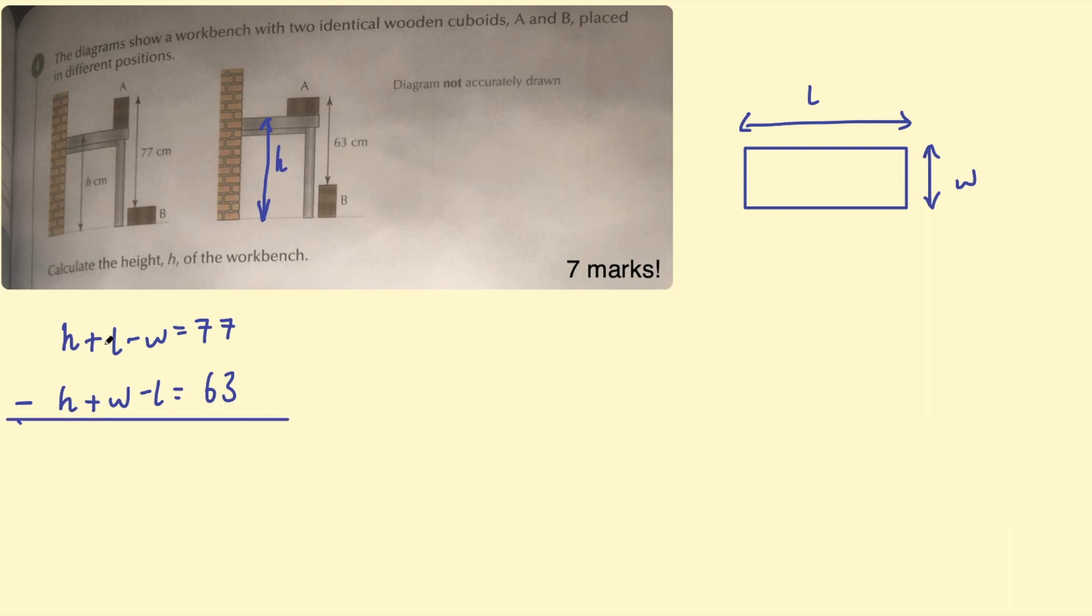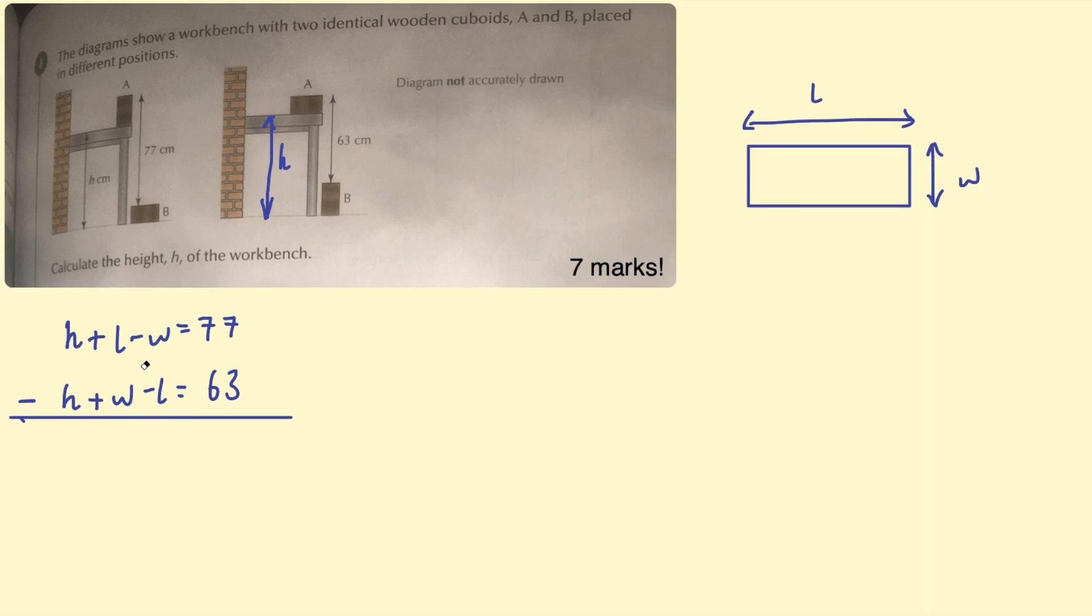So to eliminate one of the unknowns, you can subtract these equations. This is called the elimination method of solving simultaneous equations. So subtract these equations, just as you'd subtract anything else, like subtract two two-digit numbers. And I actually might write this round slightly differently because it's going to make it easier to solve with the simultaneous equations. So we had negative L plus W. Okay, basically when you're doing elimination, it's important to have the unknowns lined up, or it just makes it slightly easier.